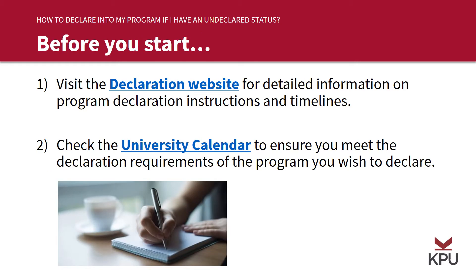Before you start the process, make sure you check these two websites that contain important information. The first one is the declaration website, where you'll be able to find detailed information on program declaration instructions as well as the timelines. The second one is the university calendar, where you can find out if you meet your program declaration requirements before you put in your request. We'll look into each website a little further.